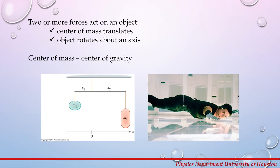Center of mass is also known as the center of gravity. It is a unique point in an object which can be used to describe the response of external forces and torques. It is the point where an object can be balanced in a uniform gravitational field.